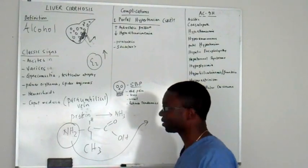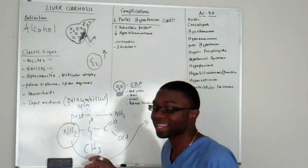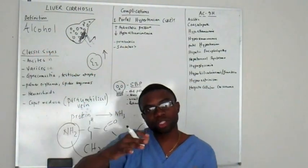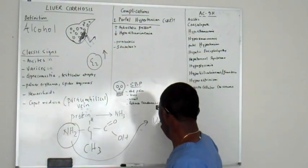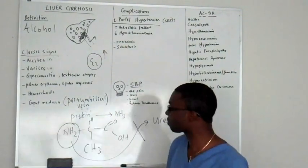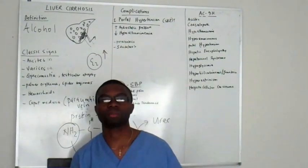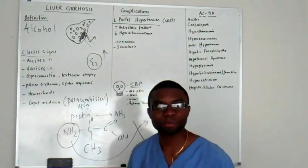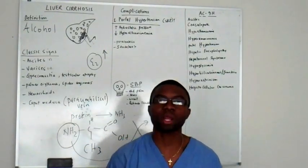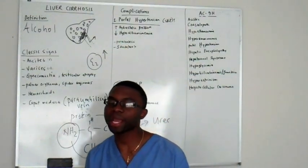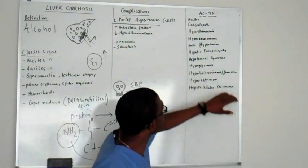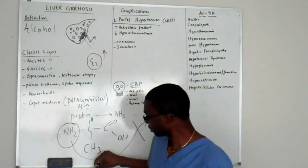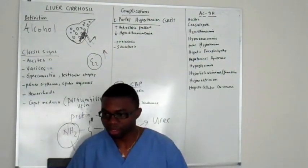Since the liver can't process ammonia into urea, it backs up and goes into the bloodstream. The ammonia level is ridiculously high. The problem is this ammonia can go to your brain and mess you up. We call that hepatic encephalopathy.